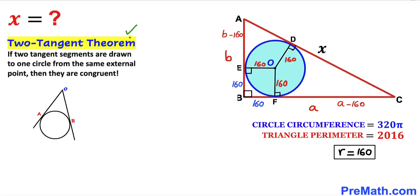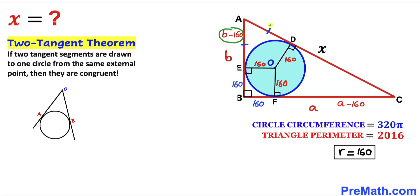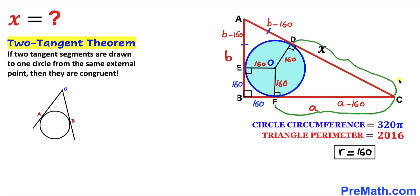Now let's recall the two tangent theorem: if two tangent segments are drawn to one circle from the same external point, they are congruent. Applying this to our diagram, AE is congruent to AD. We know AE is b minus 160, so AD is also b minus 160. Similarly, FC is congruent to CD, so CD equals a minus 160.